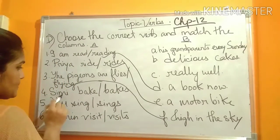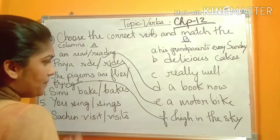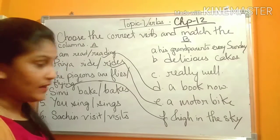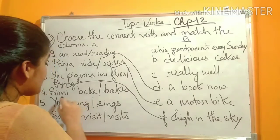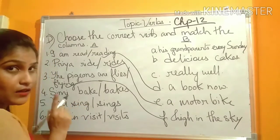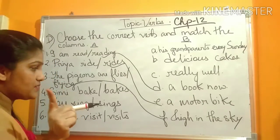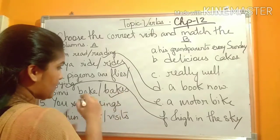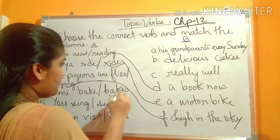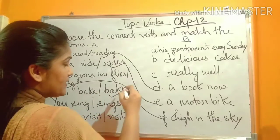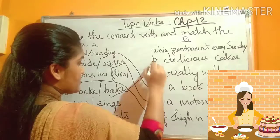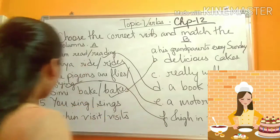Number four: Simi — bake or bakes? Simi is one girl, only one person. So it will be bakes, not bake. Bakes what? Delicious cakes.